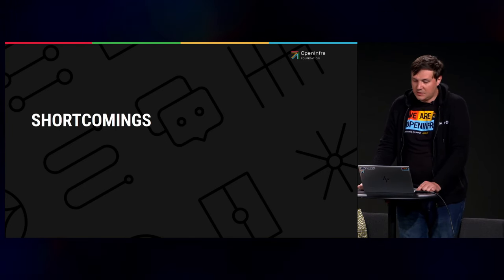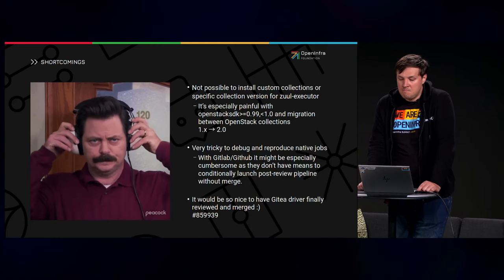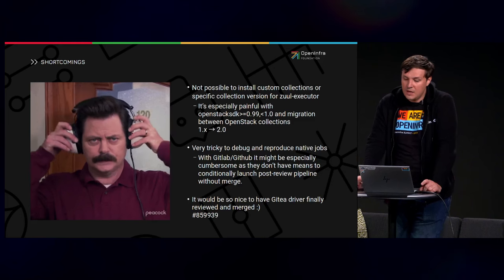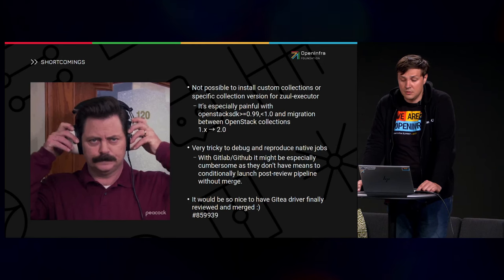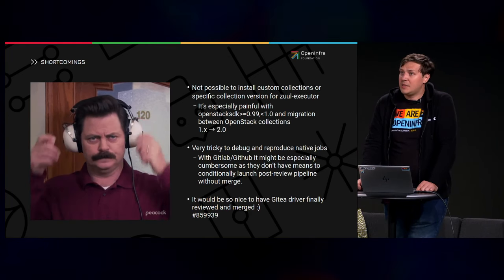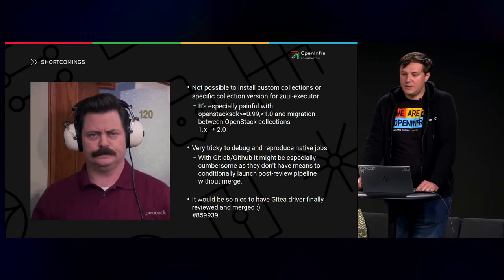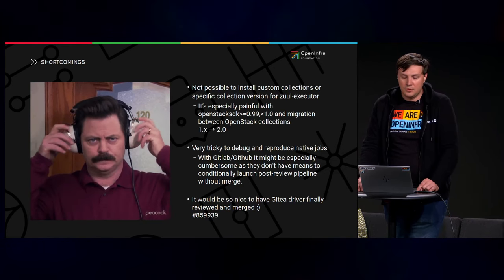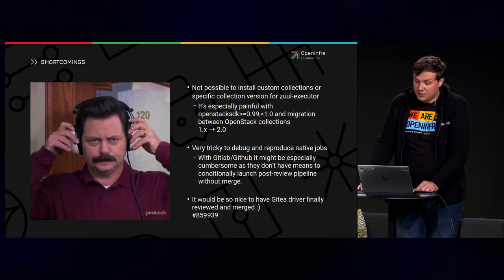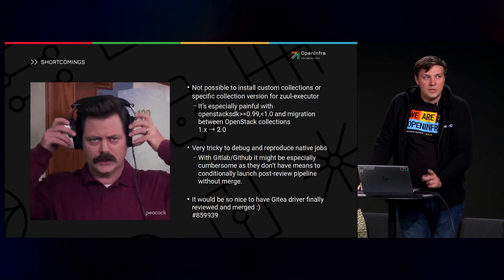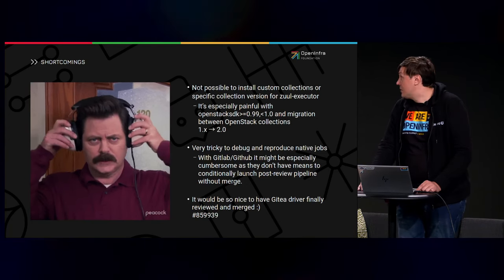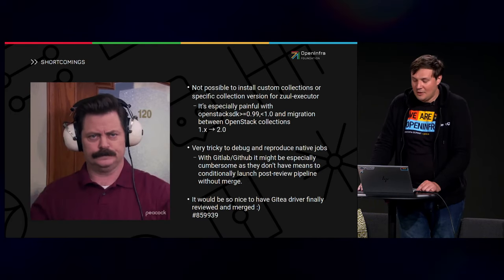There are also a couple of shortcomings. First, as far as I know, it's not possible to manage versions of collections or install custom collections to the Zuul executor. This was very troublesome when the OpenStack collection migrated from version one to version two, because the modules were incompatible — you upgrade Zuul and end up with tons of broken code that you need to replace in one day and cannot do in advance. Next, it's also tricky to debug or reproduce native jobs before pushing a change, especially ones that require post-merge functionality, and especially in GitLab and GitHub modules. And lastly, it would be really nice to have the GTA driver finally reviewed — it's been a couple of years now, so it's about time.